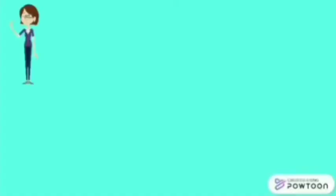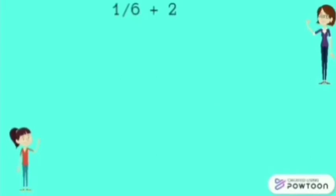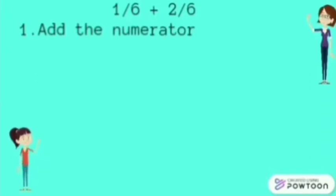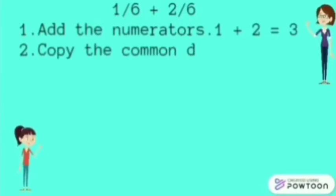For our second example, we will add one-sixth plus two-sixths. First, add the numerators. One plus two is three. Next, copy the common denominator. For one-sixth and two-sixths, the common denominator is six.